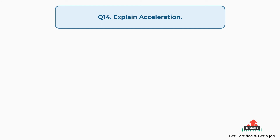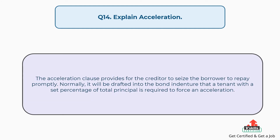Question number fourteen: explain acceleration. The answer is, the acceleration clause provides for the creditor to require the borrower to repay promptly. Normally, it will be drafted into the bond indenture that a tenant with a set percentage of total principal is required to force an acceleration.